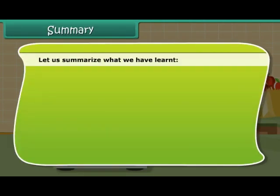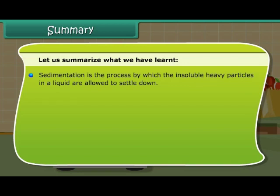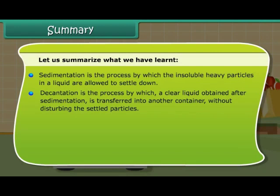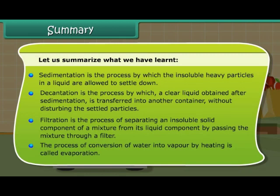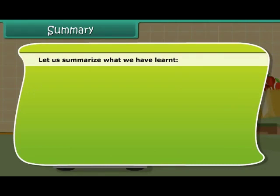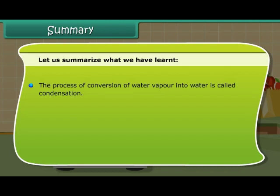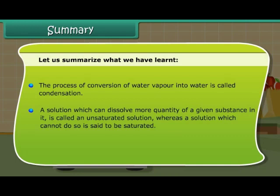Let us summarize what we have learned. Sedimentation is the process by which the insoluble heavy particles in a liquid are allowed to settle down. Decantation is the process by which a clear liquid obtained after sedimentation is transferred into another container without disturbing the settled particles. Filtration is the process of separating an insoluble solid component of a mixture from its liquid component by passing the mixture through a filter. The process of conversion of water into vapor by heating is called evaporation, and the process of conversion of water vapor into water is called condensation. A solution which can dissolve more quantity of a given substance is called an unsaturated solution, whereas a solution which cannot do so is said to be saturated.